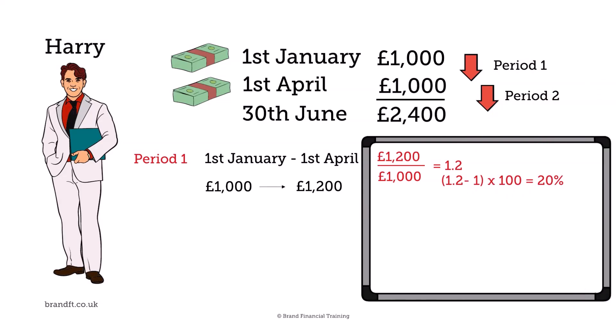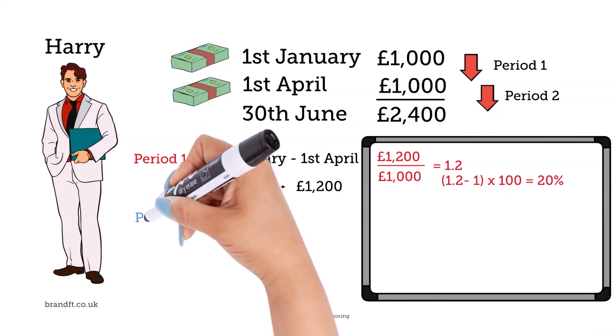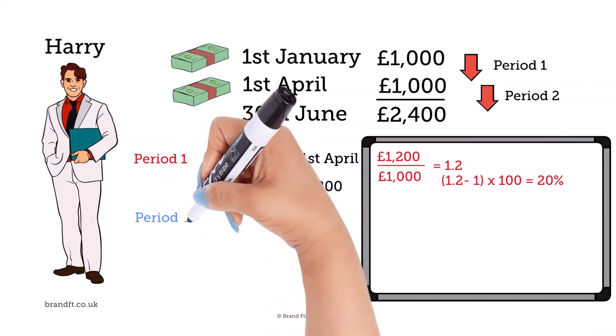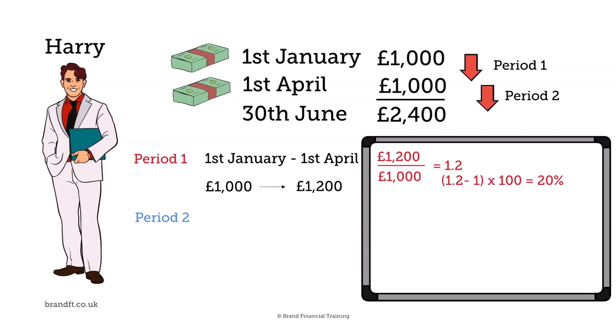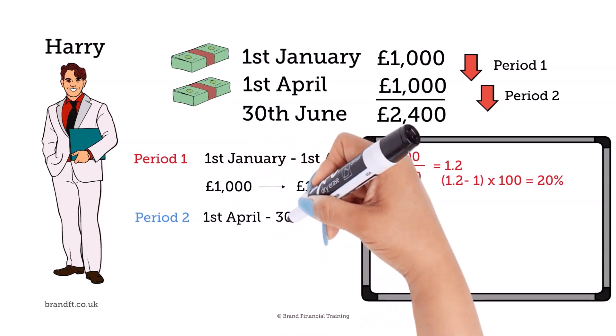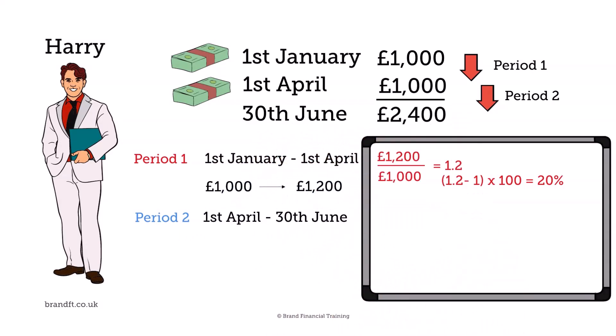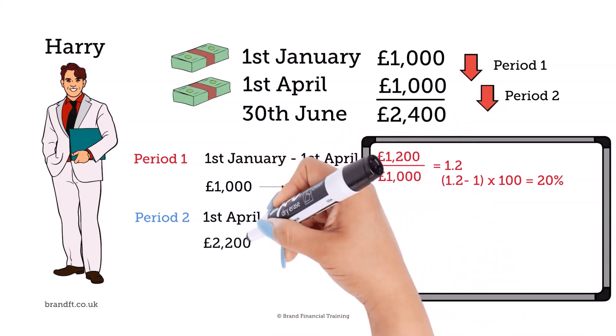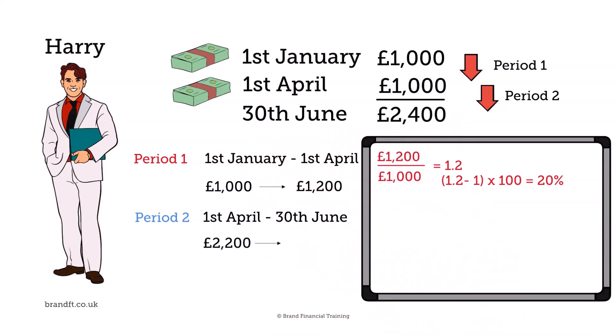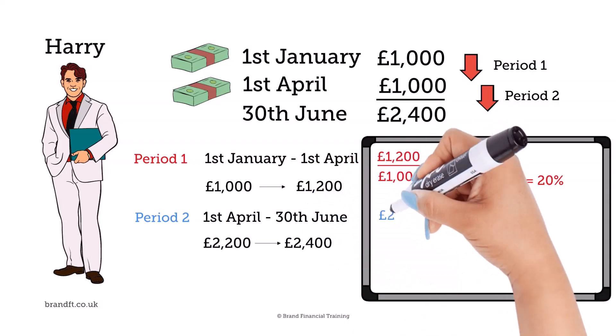Period 2 is the next three months. Because of the additional cash, we have a starting value of the fund plus the further investment of £2,200, and an end value of £2,400.